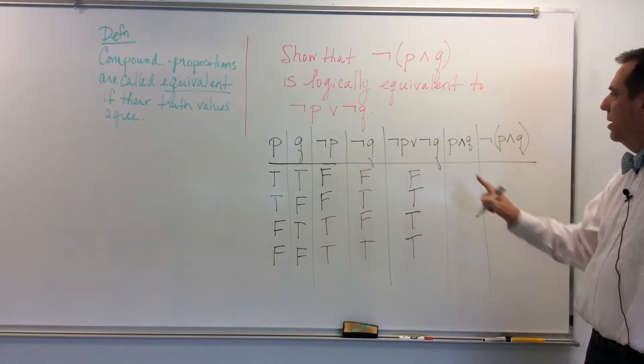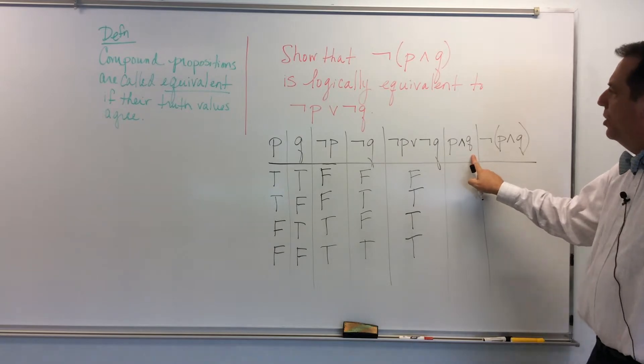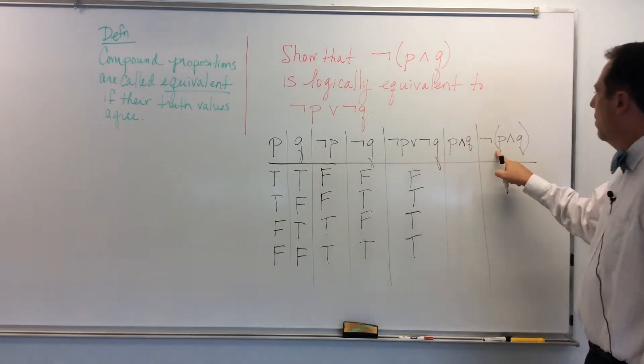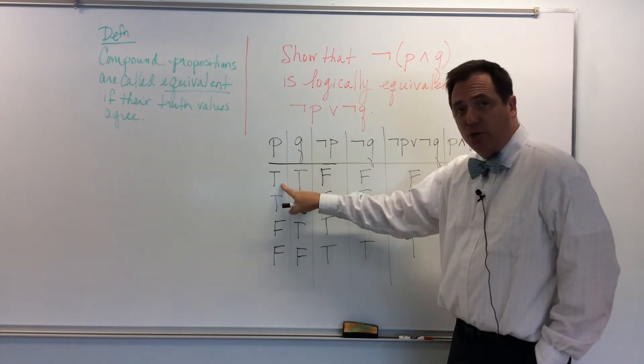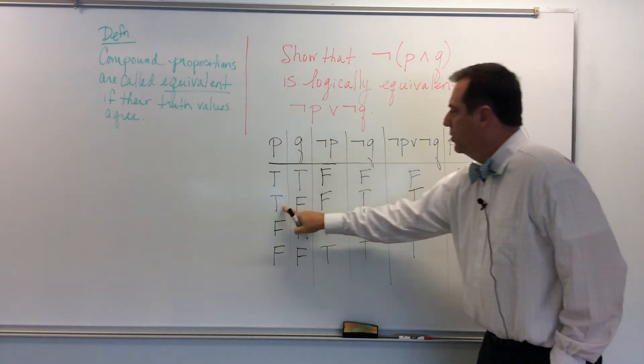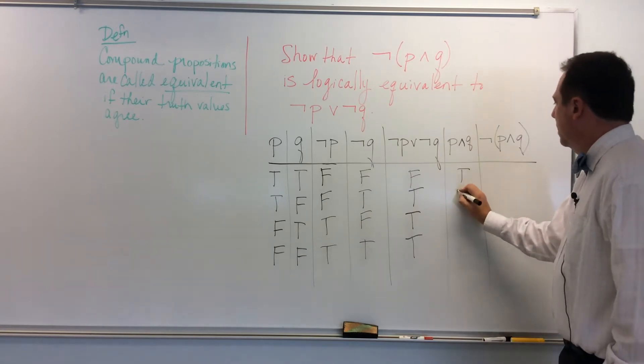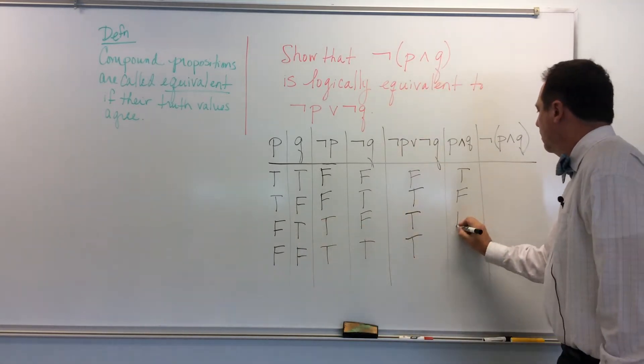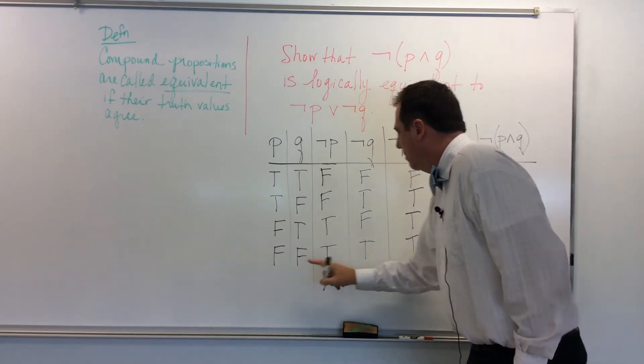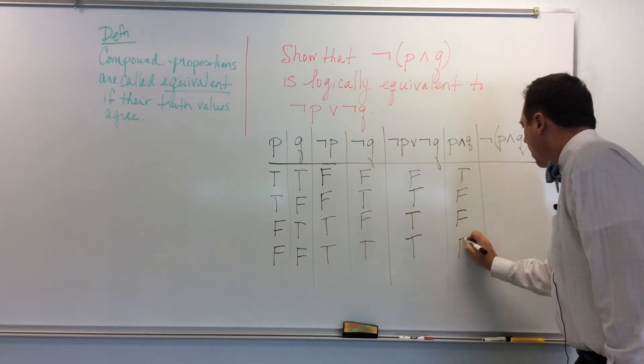Okay, so we're close to the end here. P and Q, I need to get P and Q before I negate it. So P and Q here, I go back to the beginning. True and true is true. True and false is false. False and true is false. False and false is false.